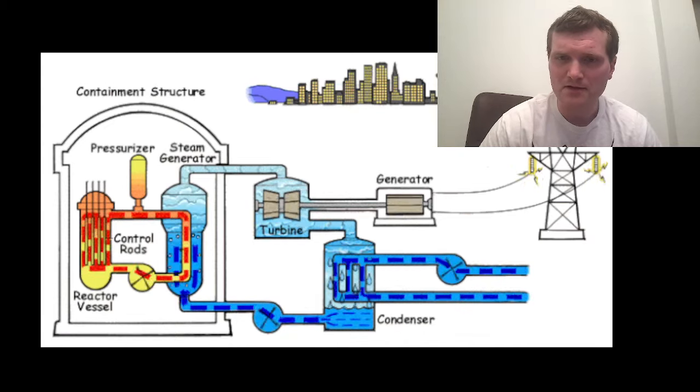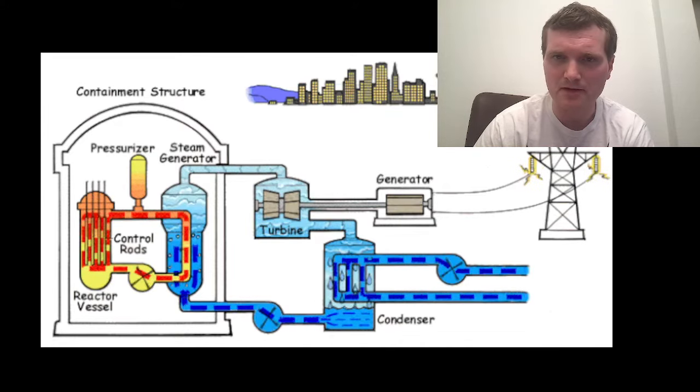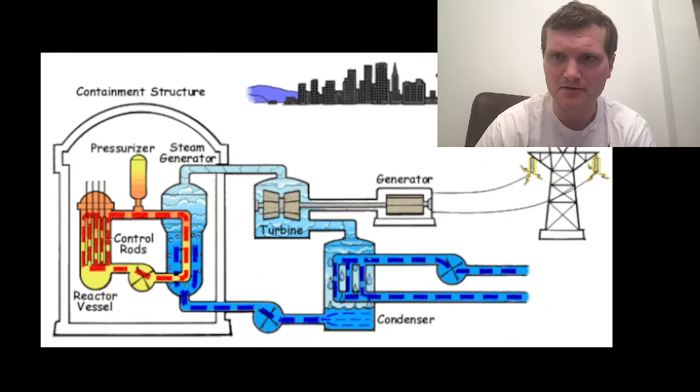So as you can see in our diagram, when the main turbine of a nuclear power plant trips, that causes the reactor over in the reactor vessel to trip.